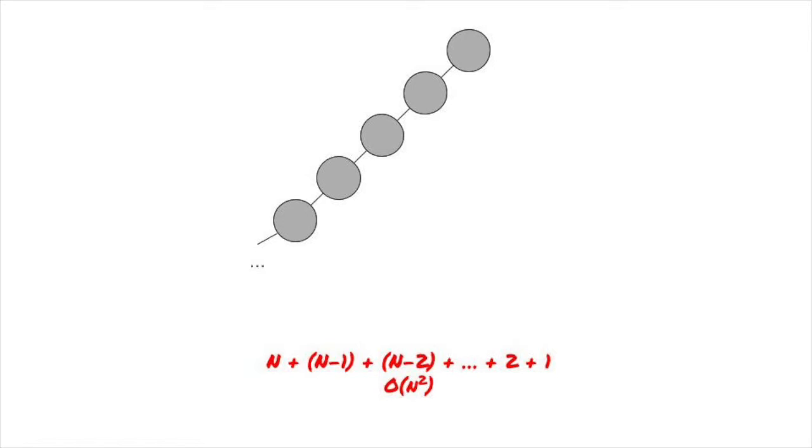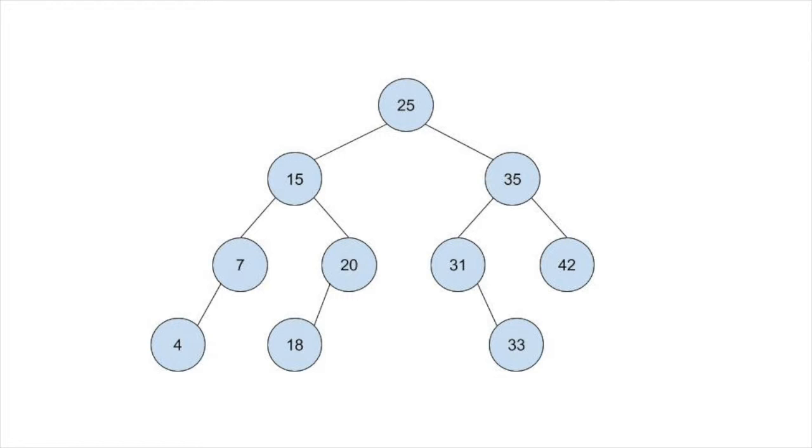We're duplicating work here by checking some nodes many times. We can check each node just once by figuring out what the minimum and maximum values of the node should be as we recurse. Let's go back to our example binary search tree. Starting from the root, when we recurse into the left node, 15, we know that the upper bound is 25, since that's the value of the root. Any nodes to the left have to be less than 25, and we can pass that knowledge along.